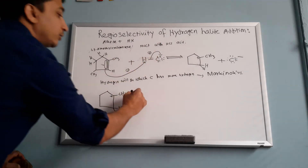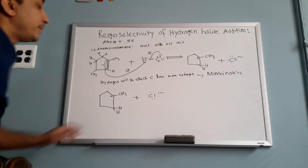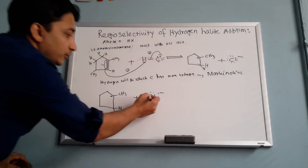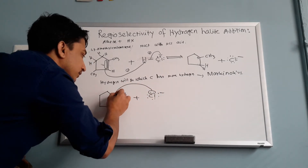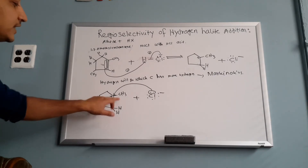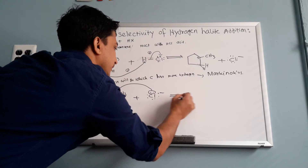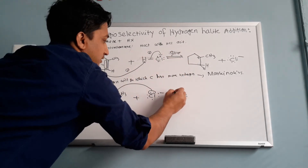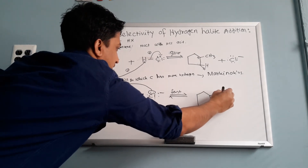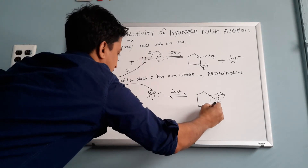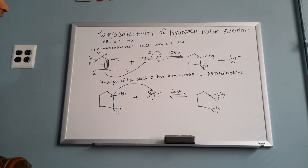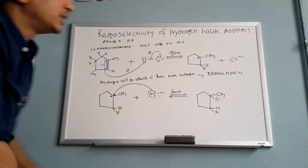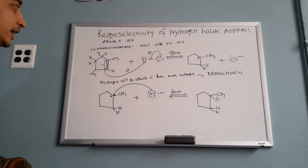You have a carbocation — a positively charged carbon — and you have a nucleophile, Cl minus, which is negatively charged. They attack each other. The negative attacks the positive. So you break the double bond, break the alkene, and add chlorine and hydrogen — that's why this is called the regioselectivity of hydrogen halide addition.